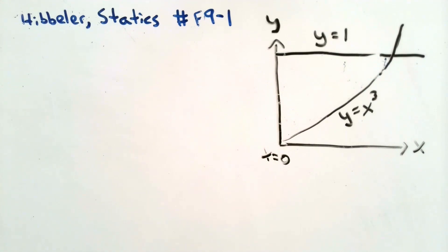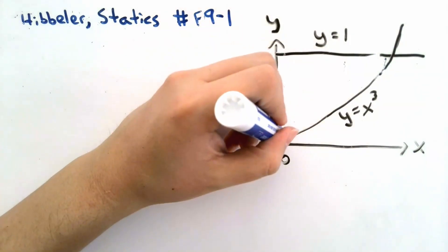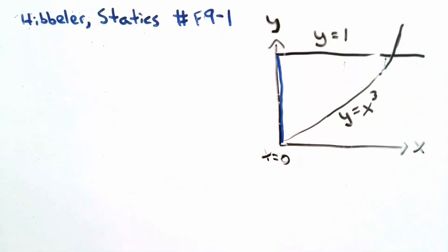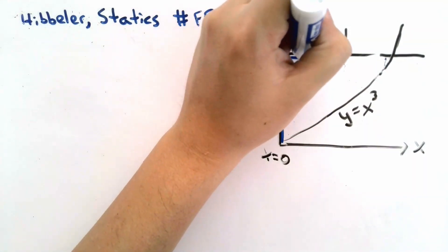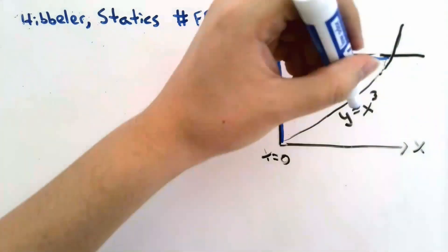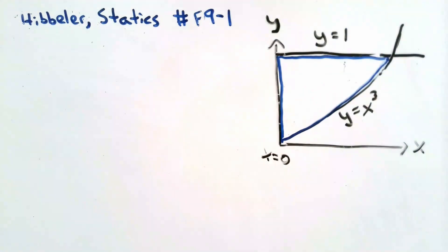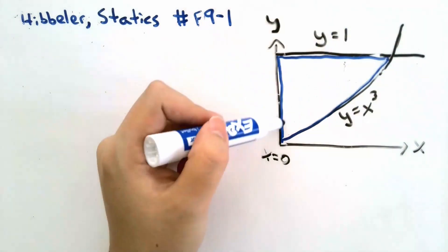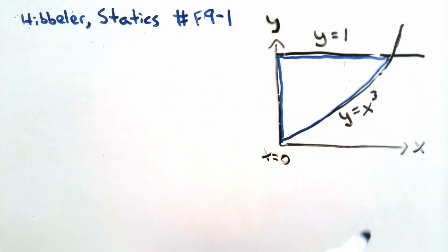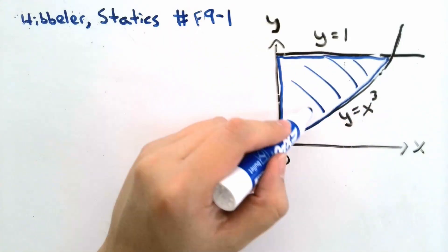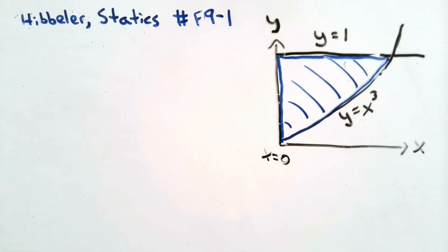The first thing we need to do is identify the area in question. Because we're given the three bounding lines — x equals 0, which is simply the y-axis; y equals 1, which is a constant horizontal line; and y equals x cubed — the area in question will be the area bounded by these three lines. In other words, it'll be the area that I'm shading right now.